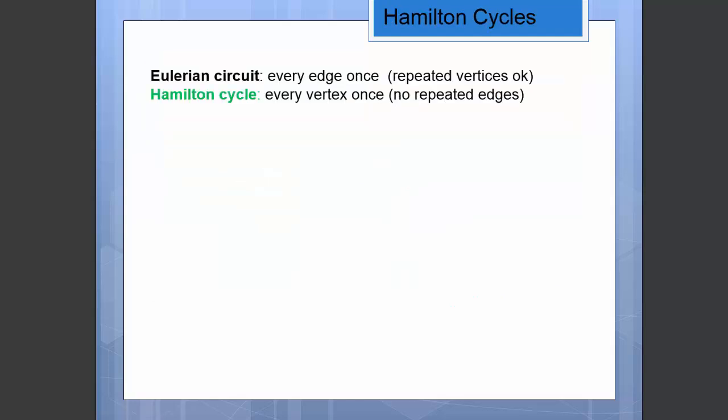A Hamilton cycle is a cycle that goes through the graph and uses every vertex exactly once, but you cannot repeat any edges. This sounds similar to an Eulerian circuit where you use every edge exactly once and repeated vertices are okay. These two concepts sound very similar. We discussed Hamilton cycles in video 27.